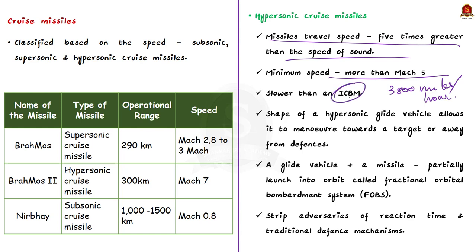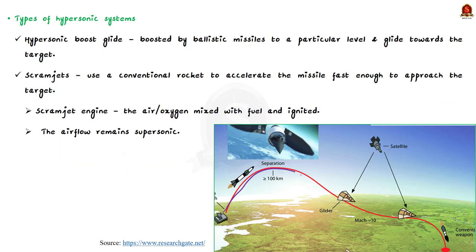When a glide vehicle is combined with a missile, it can partially launch into orbit — called Fractional Orbital Bombardment System (FOBS). This could neutralize adversaries' reaction time and traditional defense mechanisms. There are currently two types of hypersonic systems: boost-glide and scramjets.